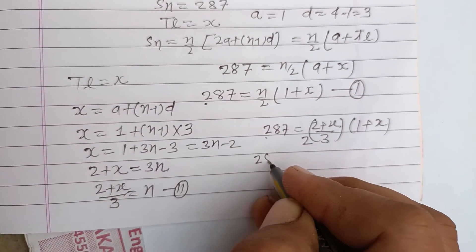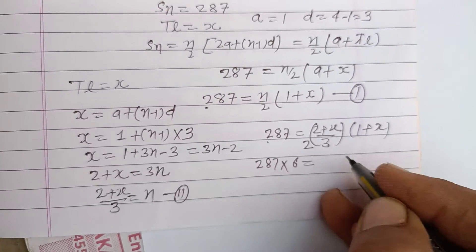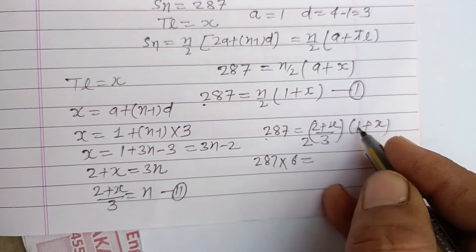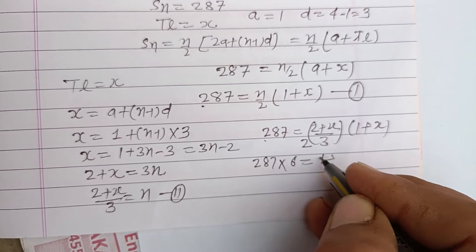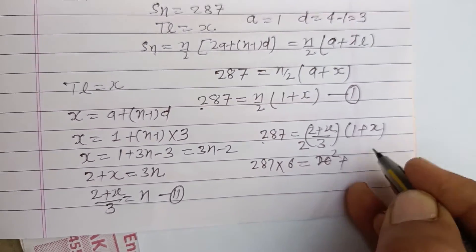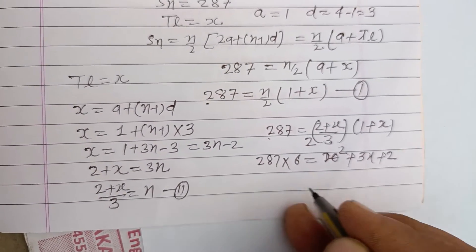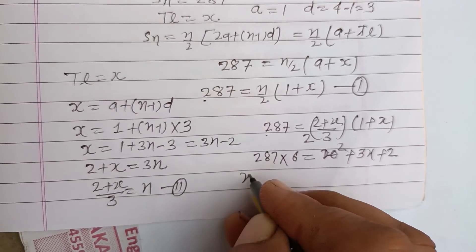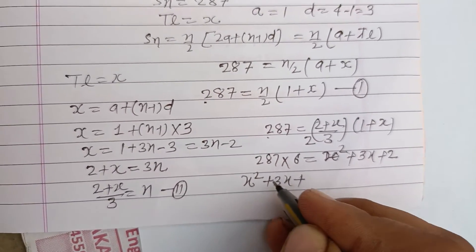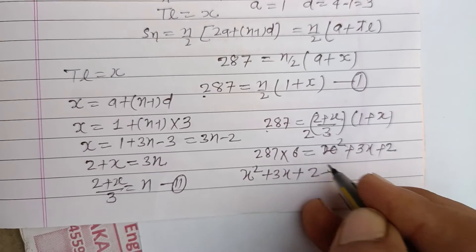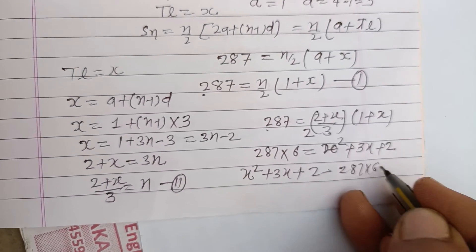So 287 equals (2 plus x) over 6 times (1 plus x). Multiplying both sides by 6: 287 times 6 equals (1 plus x)(2 plus x), which expands to x squared plus 3x plus 2. Taking everything to one side: x squared plus 3x plus 2 minus 287 times 6 equals 0.